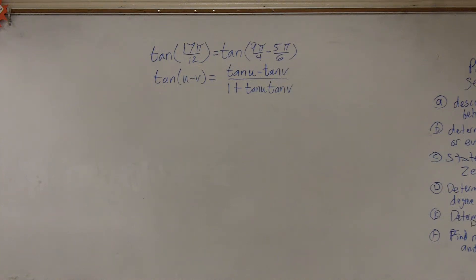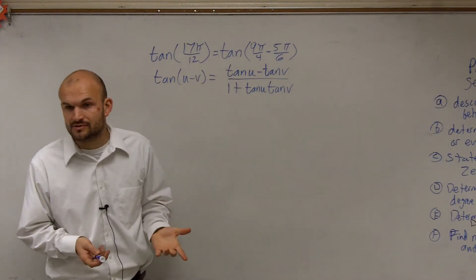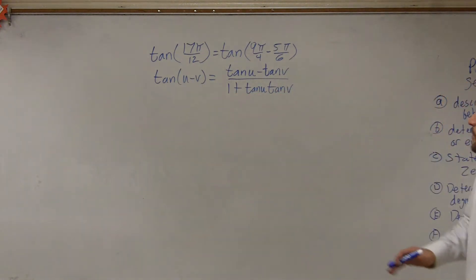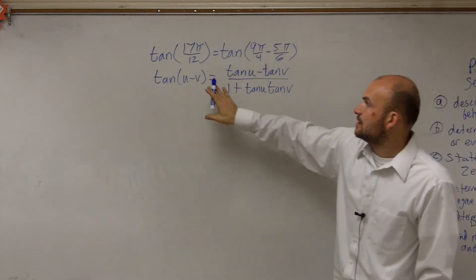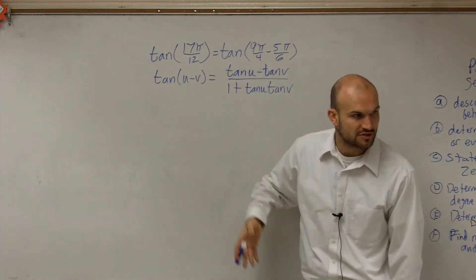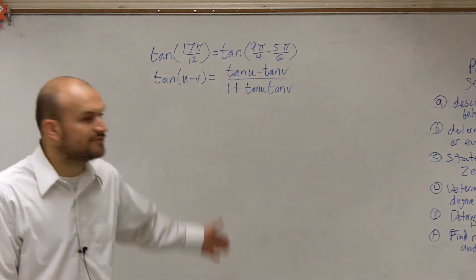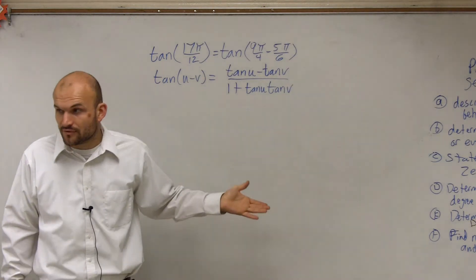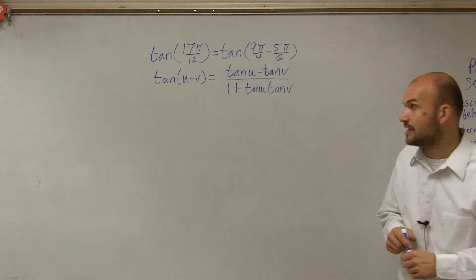What we have here is the tangent of 17π/12, which equals the tangent of 9π/4 minus 5π/6. We broke up 17π/12 so we could rewrite our angle as a difference of two angles. We can evaluate using the tangent difference formula, because tan(17π/12) is not something we could evaluate directly from the unit circle — we'd have to approximate.